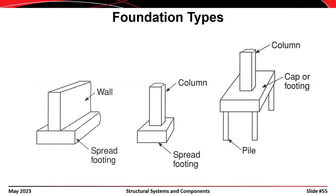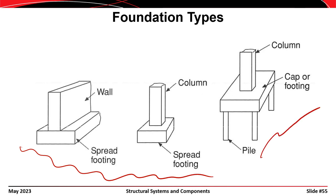Now we'll shift to a discussion of foundations. There are a number of different foundation types: spread footings on the left and center showing a wall and column being supported, and a pile cap supported by piles on the right. Spread footings are shallow foundations; the pile cap is a deep foundation. The choice depends on the forces being supported and the soil conditions. If you have low forces or good soil, you can usually use a shallow foundation. If you have high forces or poor soil, you need a deeper foundation.